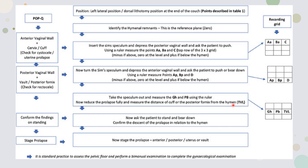Take the speculum out and measure the genital hiatus and perineal body using a ruler. Reduce the prolapse fully and measure the distance of the cuff or posterior fornix from the hymen, which is total vaginal length. Aa and Ap markings are also measured in the reduced state. Ask the patient to stand and bear down to confirm descent of prolapse in relation to the hymen, then stage the prolapse — anterior, posterior, uterine, or vault. POPQ does not give measurements of enterocele.